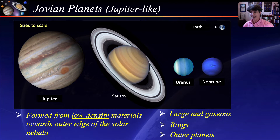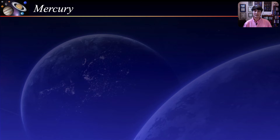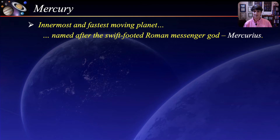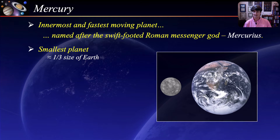We start with Mercury, the closest planet to the sun. Being the innermost planet, it is also the fastest-moving planet, and as such it was named after the swift-footed Roman messenger god, Mercurius. Mercury is not only the closest planet to the sun, it is also the smallest of the eight planets — less than half the diameter of Earth and about the same size as our moon.